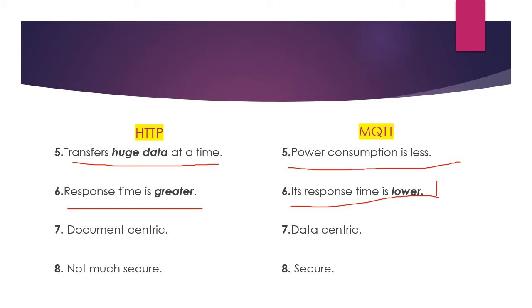The seventh difference: HTTP is document-centric while MQTT is data-centric. The eighth difference: HTTP is not as secure compared to MQTT. HTTP is secure up to some limit, but MQTT is more secure when comparing the two protocols.